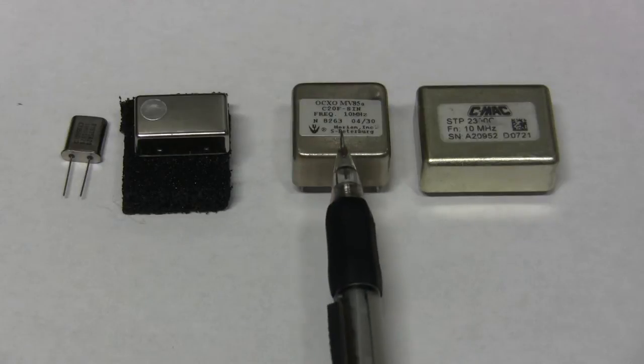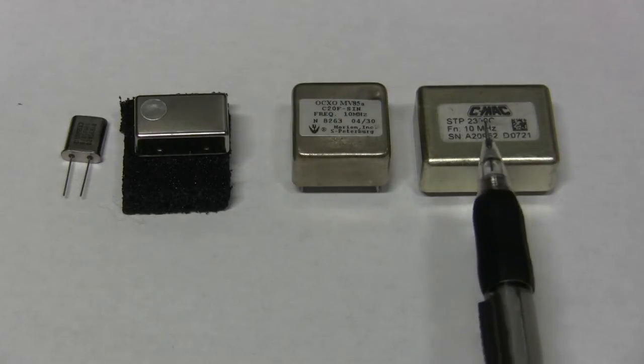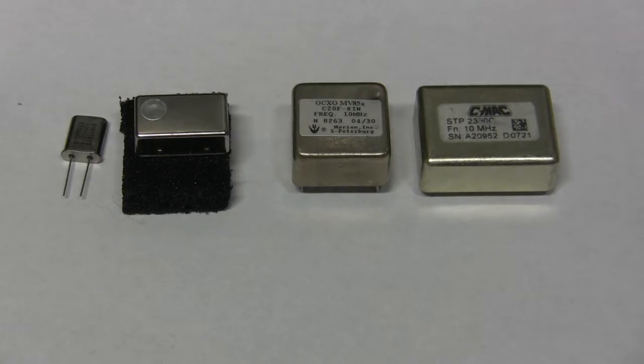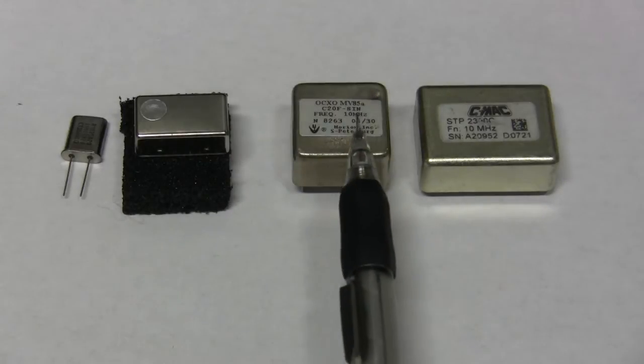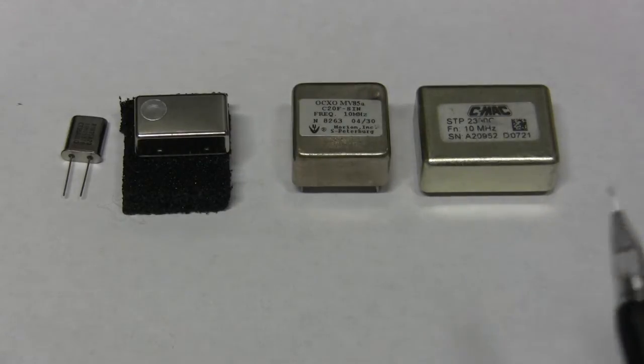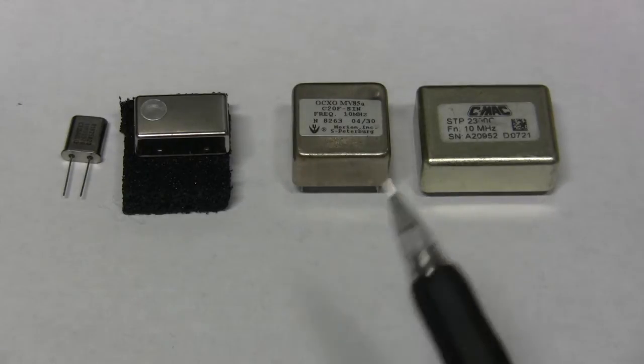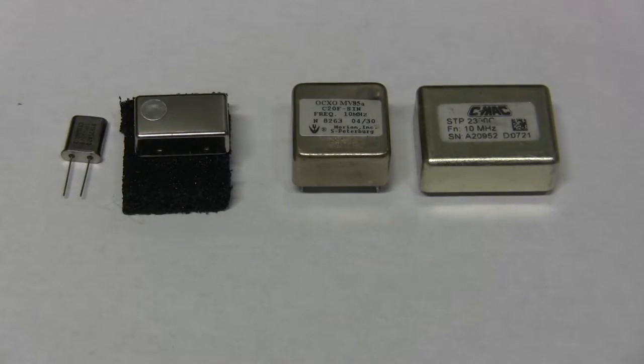Next step is these guys, oven controlled. Instead of compensating for the temperature they maintain the temperature inside. They consume more power. This guy consumes 20 mA. These guys consume much more, we'll see that later. There is a great series of videos about such OCXO oscillators and also about rubidium standard, which is way more accurate, by Jerry Sweeney. I'll put a link to his videos as well below. I highly recommend watching them.